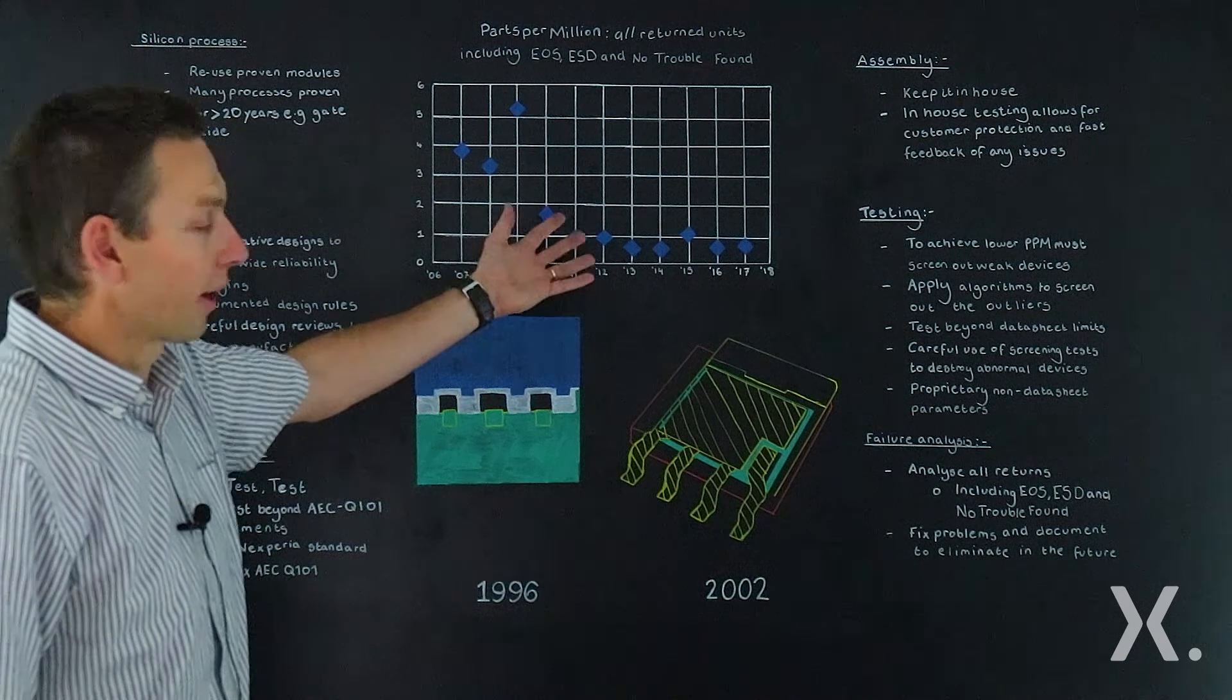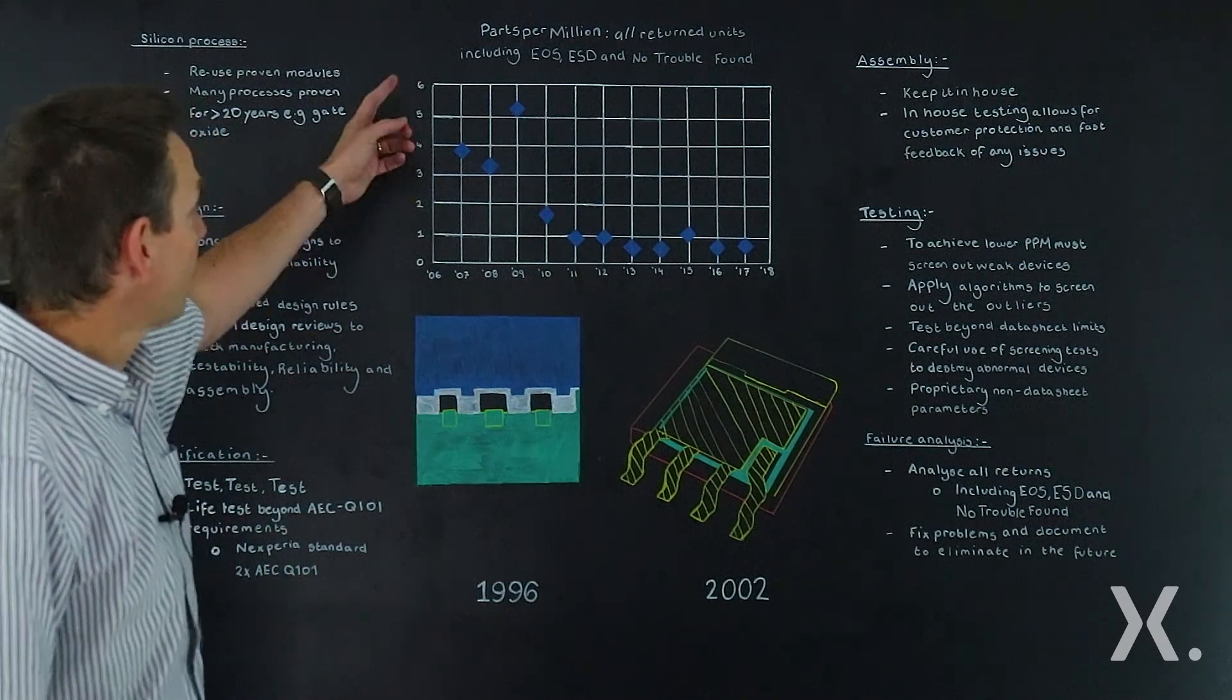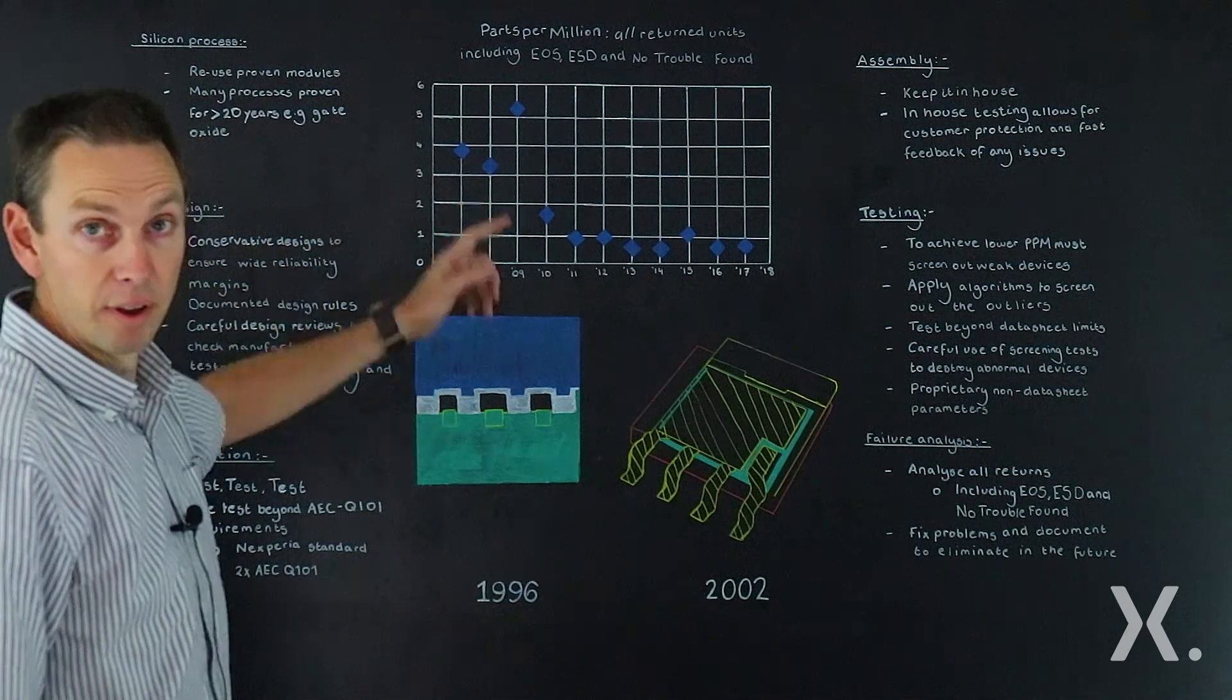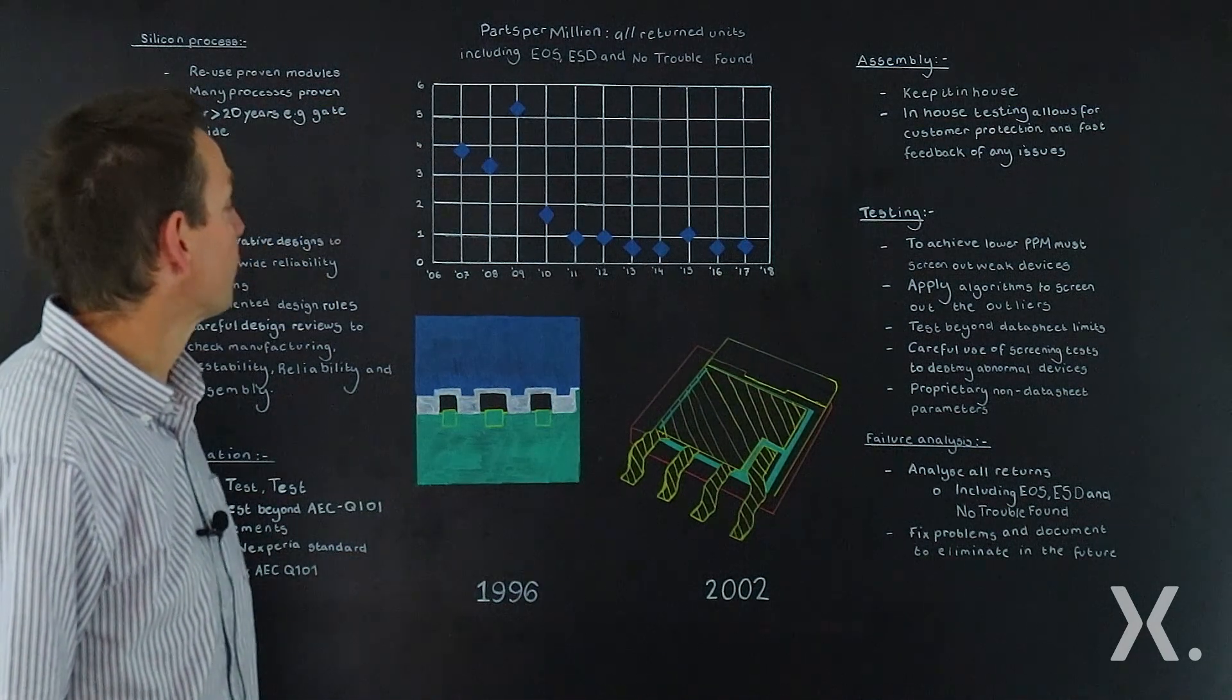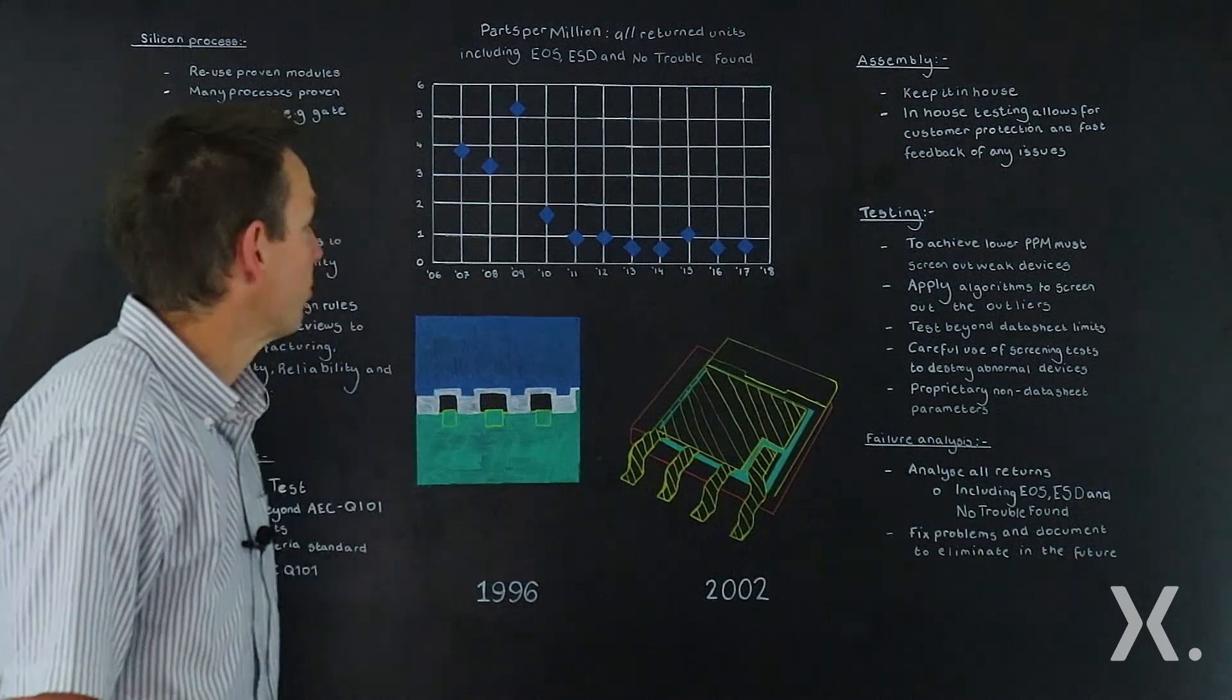We see that reflected back in the PPM of our products. So here we have a chart showing the parts per million failing units of our MOSFETs over a period of time from back about 2006 through to current day 2017.